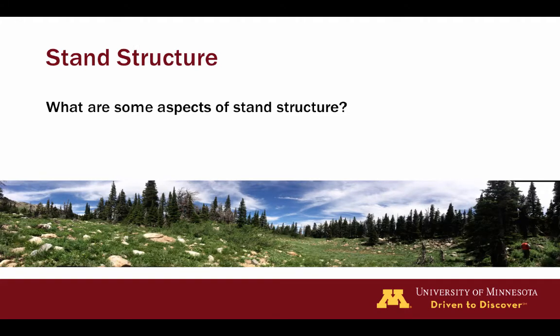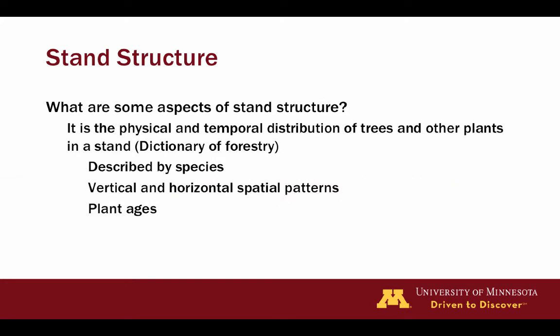Stand structure refers to the physical and temporal distribution of trees and other plants in the stand. It can be described by species, vertical and horizontal spatial patterns, and plant ages — essentially the species and structural composition of a stand. In silviculture, we want to use quantitative numbers, whether it's a diameter distribution, percent composition, or age distribution, to quantify stand structure.